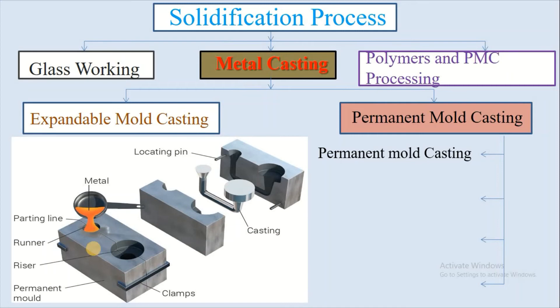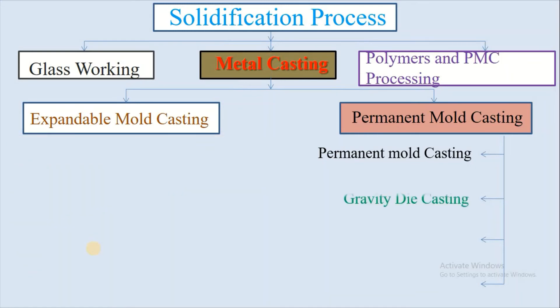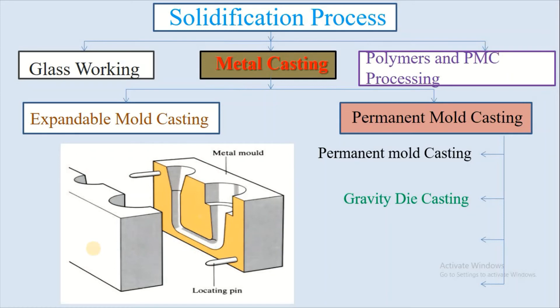Next is gravity die casting. It is a permanent mold casting process where molten metal is poured from a vessel or ladle into the mold. The mold cavity fills with no force other than gravity, and filling can be controlled by tilting the die. Typical products include cylinder heads, wheel hubs, and pistons made from non-ferrous materials, as well as crankshafts, disc brake parts, and hydraulic components made from ferrous materials for the automotive industry.